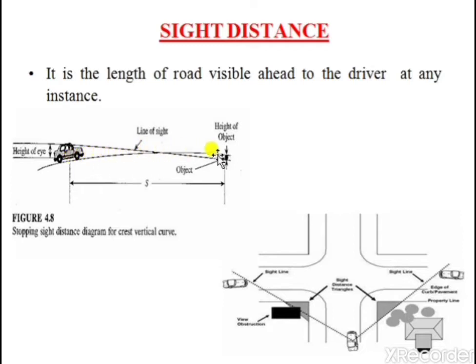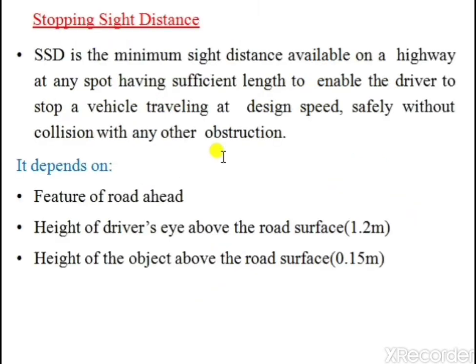When the road has a vertical curve, a driver is not able to see the object, which influences stopping sight distance. As per IRC recommendation, the driver's eye height above road surface is taken as 1.2 meters, and the height of the object above road surface is 0.15 meters for designing safe stopping sight distance.